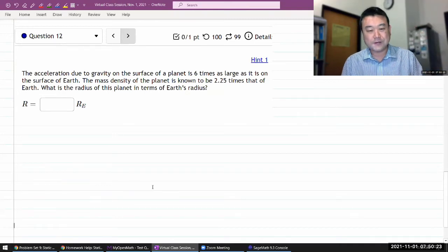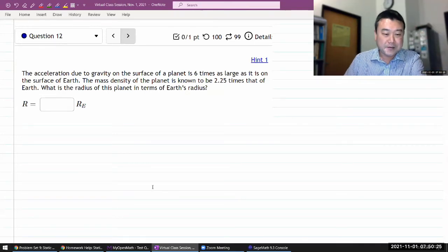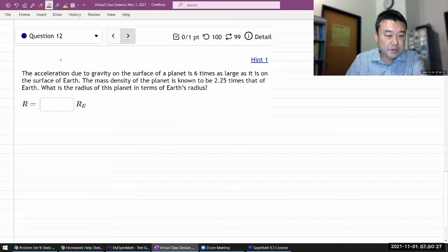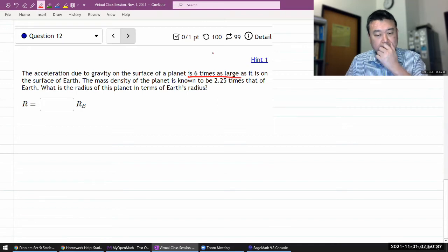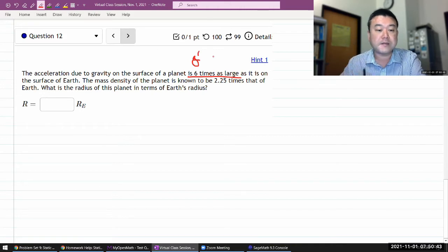It's not that complicated once you know what you're doing. This question says the acceleration due to gravity on the surface of a planet is six times as large as it is on the surface of the Earth. Let me label that as G prime. I'm going to use prime to indicate the quantities that relate to this mysterious planet. G prime is equal to 6G.